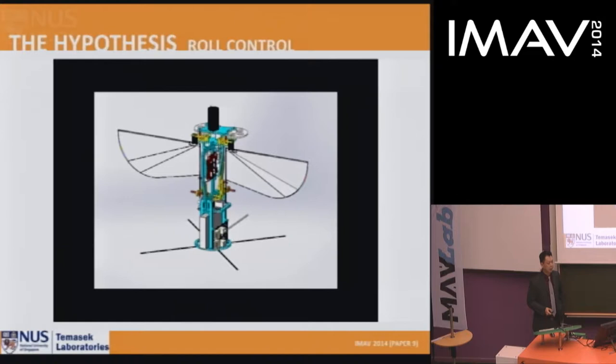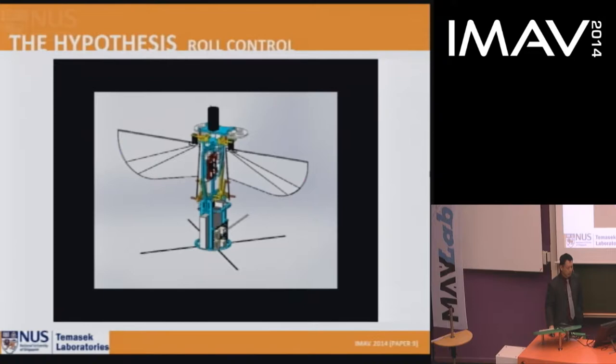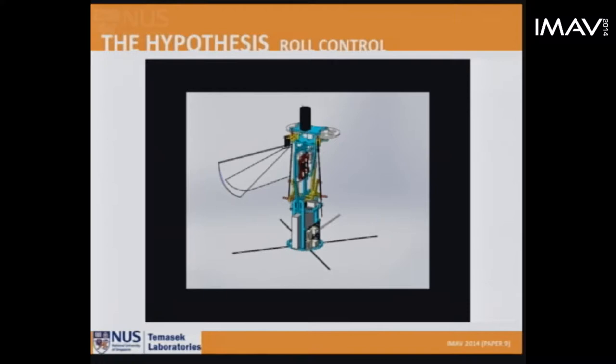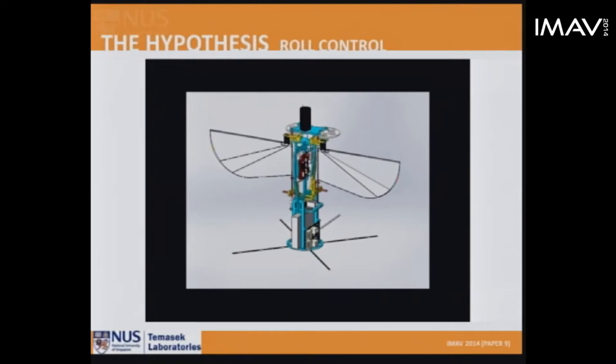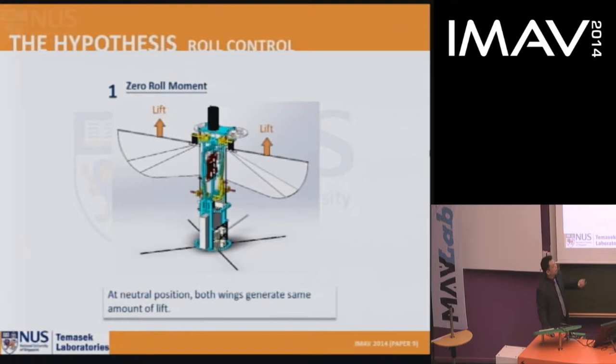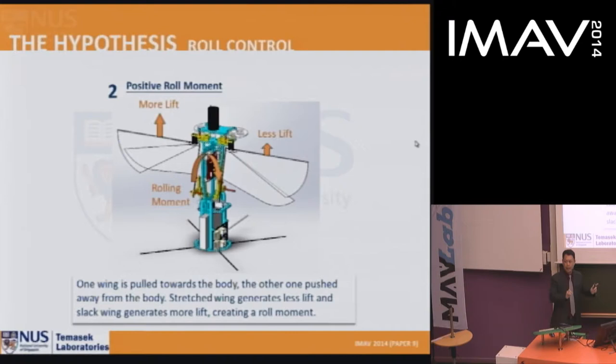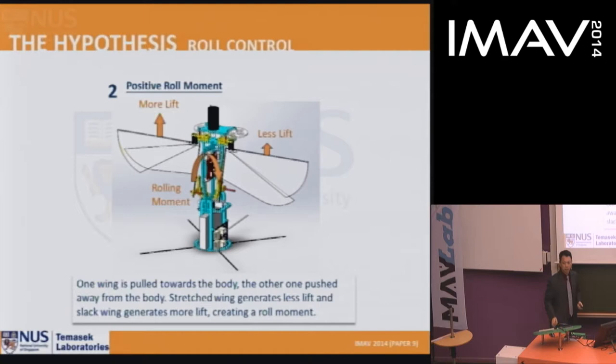Roll control involves moving the wing roots in and out. This platform concept was never built because the mechanism was judged too heavy. At neutral position both wings generate equal lift; moving the wing root in or out creates unbalanced lift and hence a rolling moment. Data for roll control has not yet been collected and will be tested in future work.